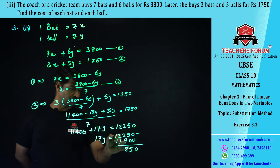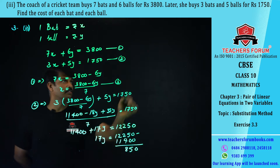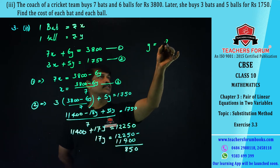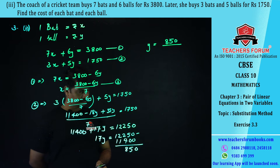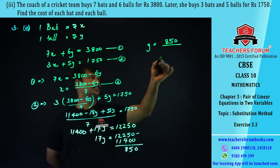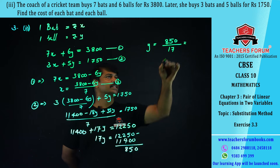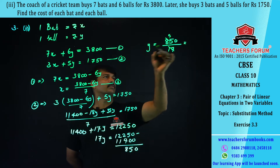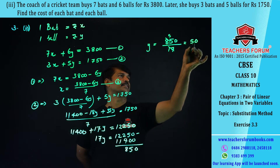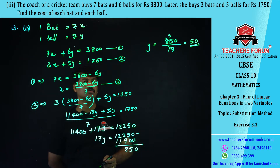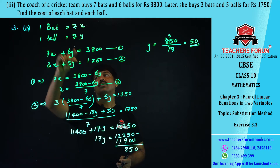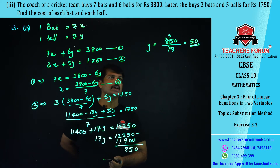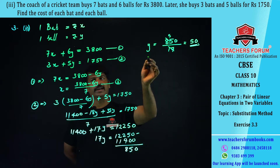From this, y = 850 / 17 = 50. The value of y is 50. What is y? y is the cost of one ball, so the cost of one ball is rupees 50. Now let us substitute the value of y into equation number three to get the value of x.